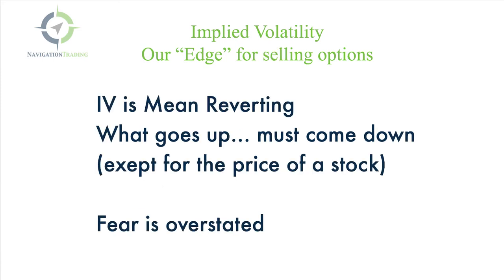I want to make a couple more points about implied volatility, and then we'll go to the platform to show you an example. The other key factor to remember about implied volatility is that it's mean reverting. What goes up must come down — except for the price of a stock. A stock can continue to go higher and higher and never revert back to its mean. But implied volatility is mean reverting. It goes up, it goes down, it expands, and it contracts.